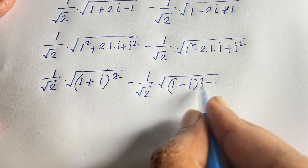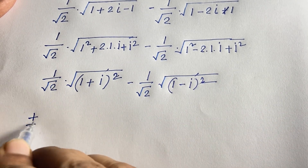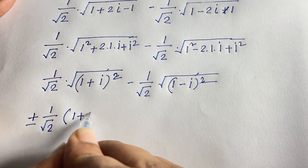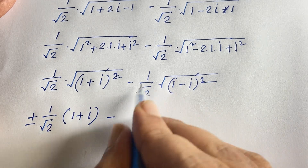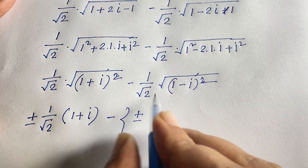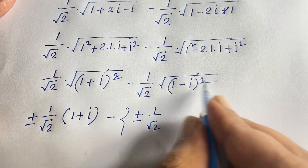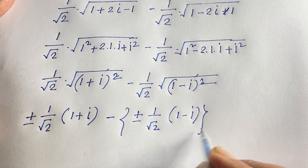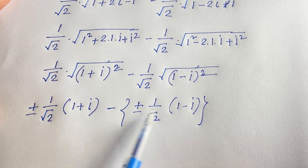Now the squares cancel with the square roots. So we get: ±(1/√2)(1 + i) for the first term, and ±(1/√2)(1 − i) for the second term.